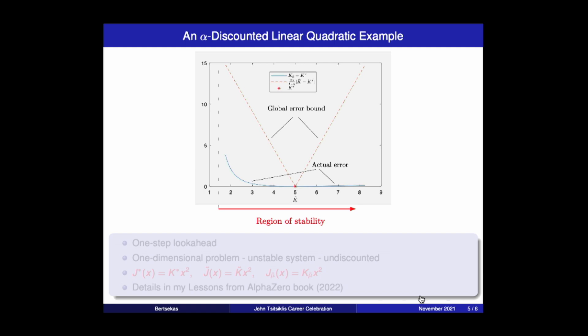So just to give you a simple figure, this is a linear quadratic problem involving a one-dimensional system, one step look ahead, but the system is unstable left uncontrolled, and the problem is undiscounted. This is what the error bound gives you, the classical error bounds, the bound that everybody relies on for error analysis. And the actual error, you can calculate it here, and it looks like that. It has no relationship. This bound has no relationship to reality.